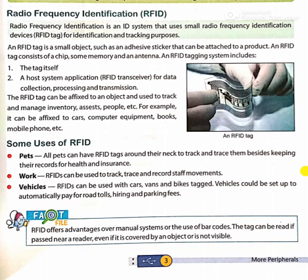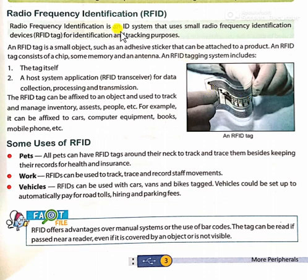The next device is RFID — radio frequency identification. RFID is a kind of tag which you can paste on any product or any living being to identify or track their movement or location. Radio frequency identification is an ID system that uses small radio frequency identification devices for identification and tracking purposes.